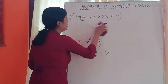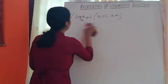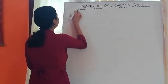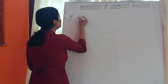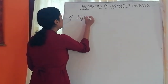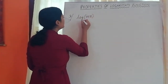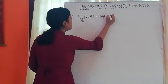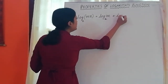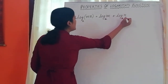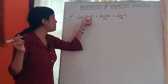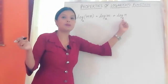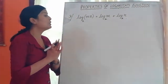Now let's go to the third property. These properties are very important. My third property is: log(mn) base a is equal to log m base a plus log n base a. Let's prove it.